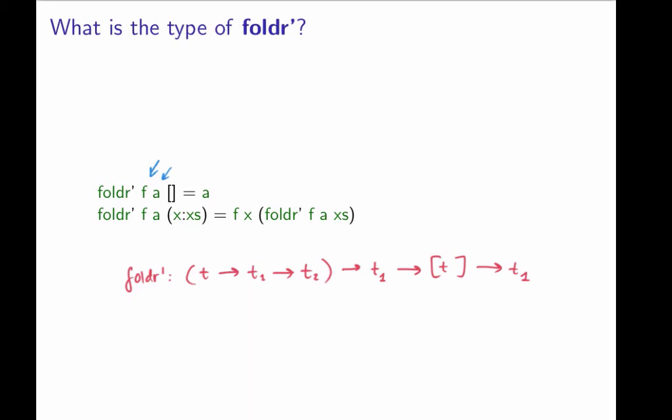Now, what about t2 then? Well, we can see from what we have here that f takes two arguments. The first one has type t. The second one has type t1. And the result of applying f to these two arguments is something of type, the return type of foldr. And we know that's t1. So this t2 is just t1.